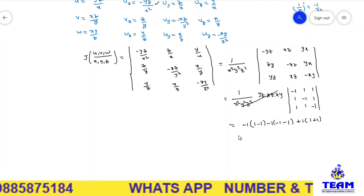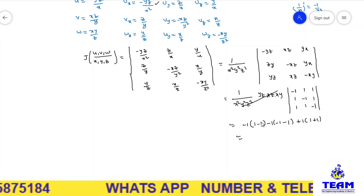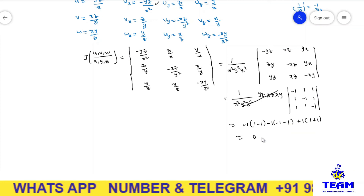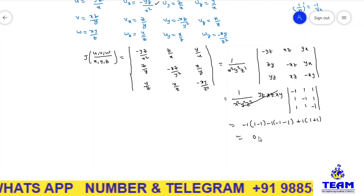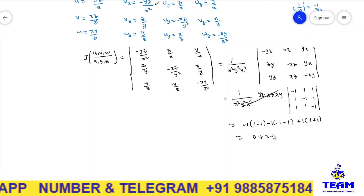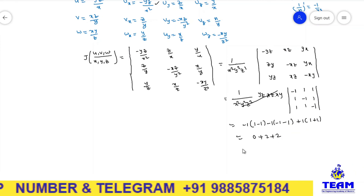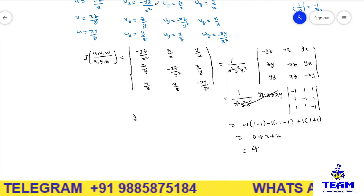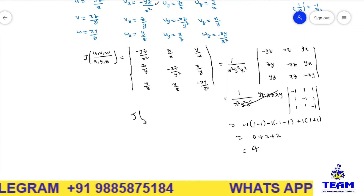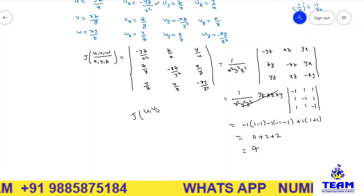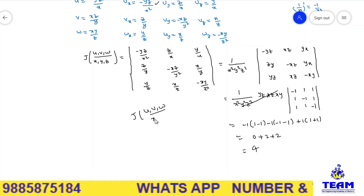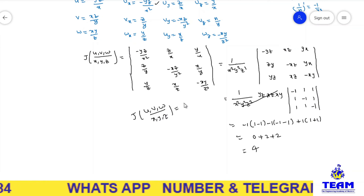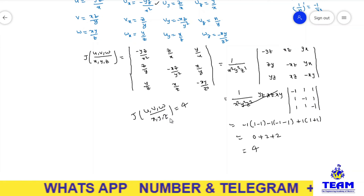Evaluating this determinant: (−1)[(−1)(−1) − (1)(1)] − (1)[(1)(−1) − (1)(1)] + (1)[(1)(1) − (−1)(1)] = (−1)(0) − (1)(−2) + (1)(2) = 0 + 2 + 2 = 4. So the Jacobian of u, v, w with respect to x, y, z is equal to 4.